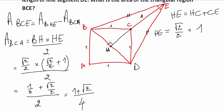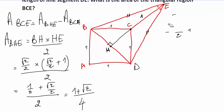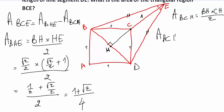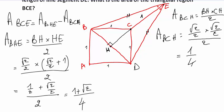This is the area of triangle BHE. Now let's compute the area of triangle BCH. Area of BCH equals BH times CH divided by 2, which is (√2/2) times (√2/2) divided by 2. √2 times √2 equals 2, so 2 divided by 4 is 1/2, and 1/2 divided by 2 is 1/4. So the area of triangle BCH equals 1/4.